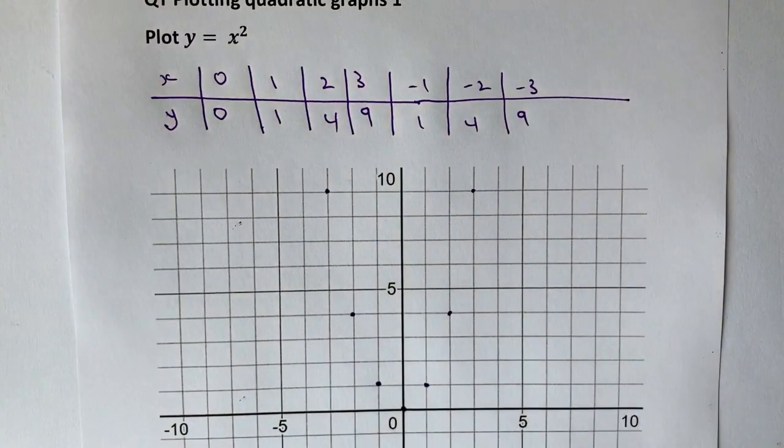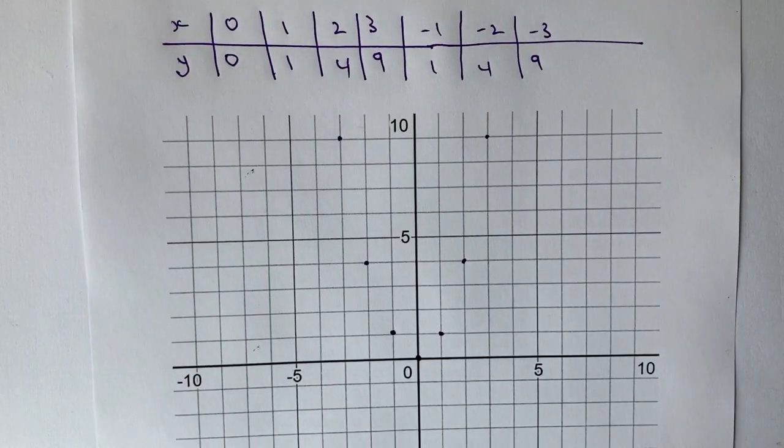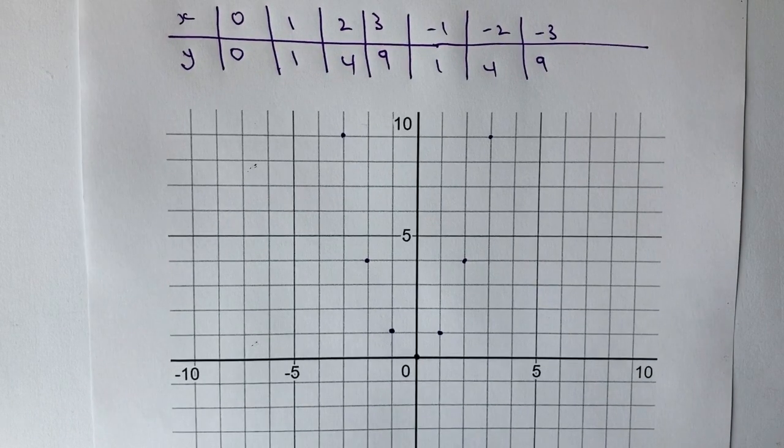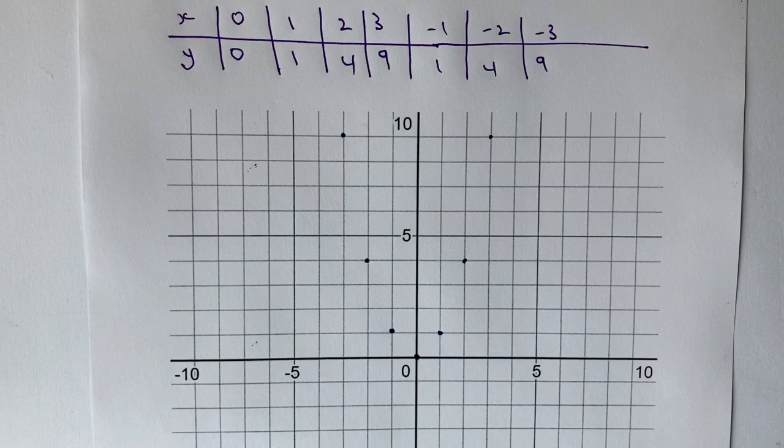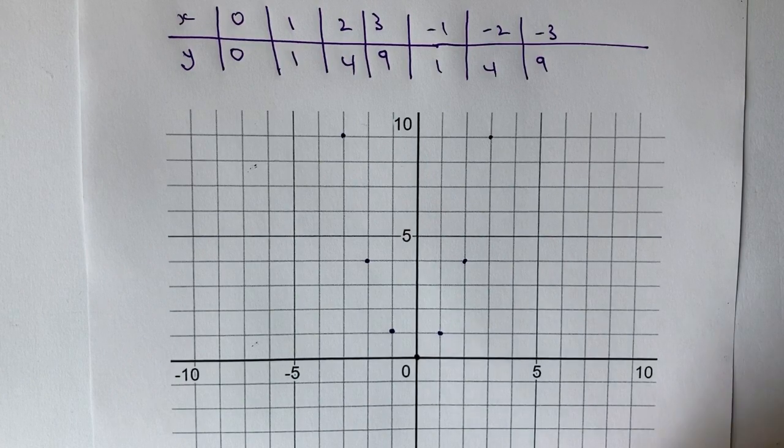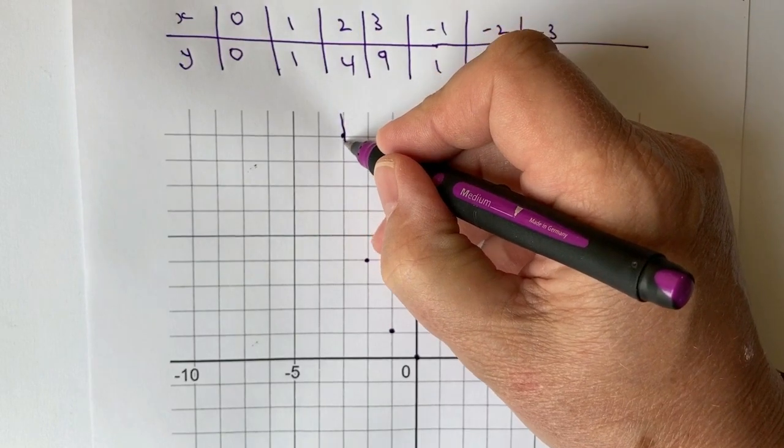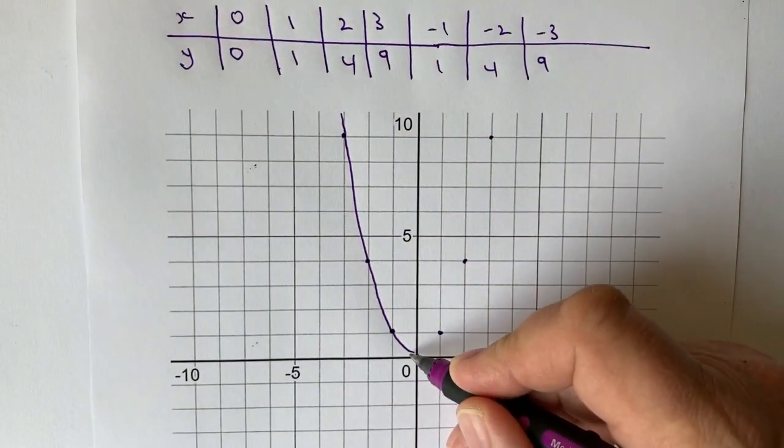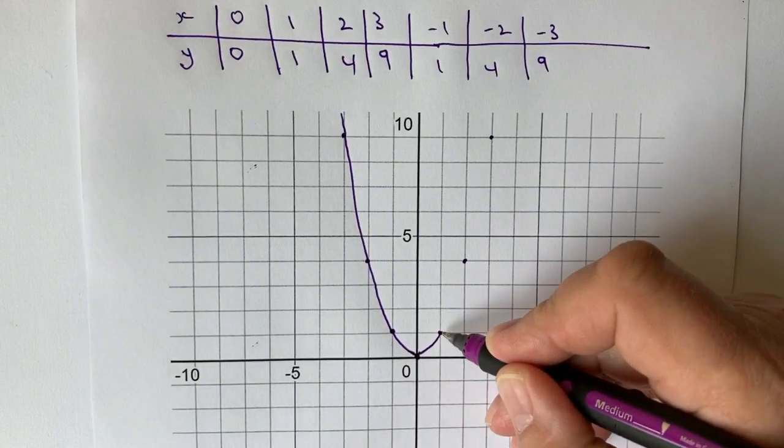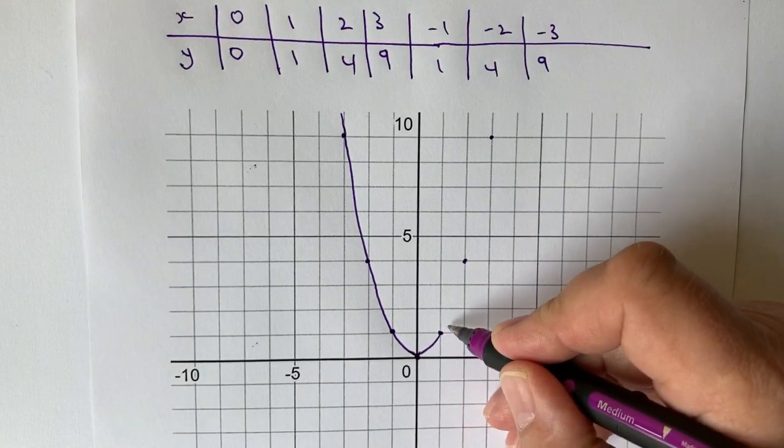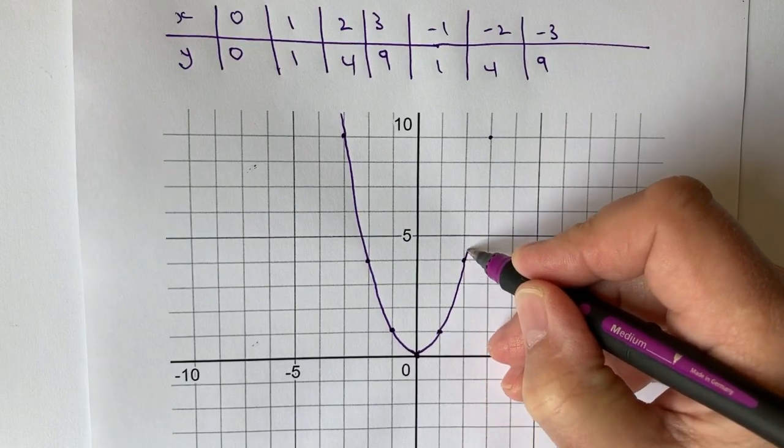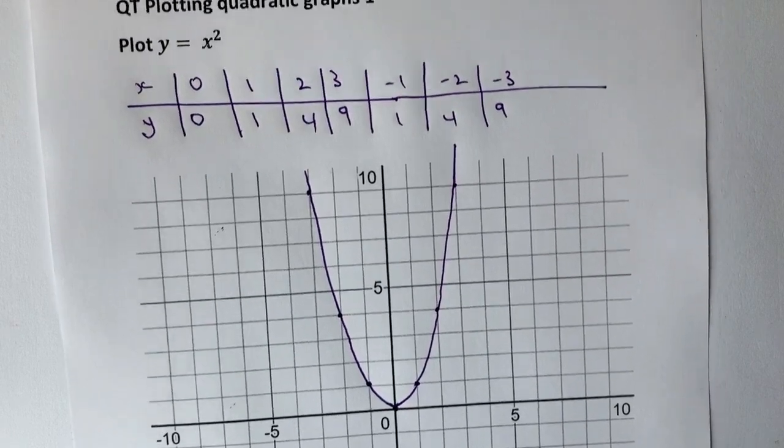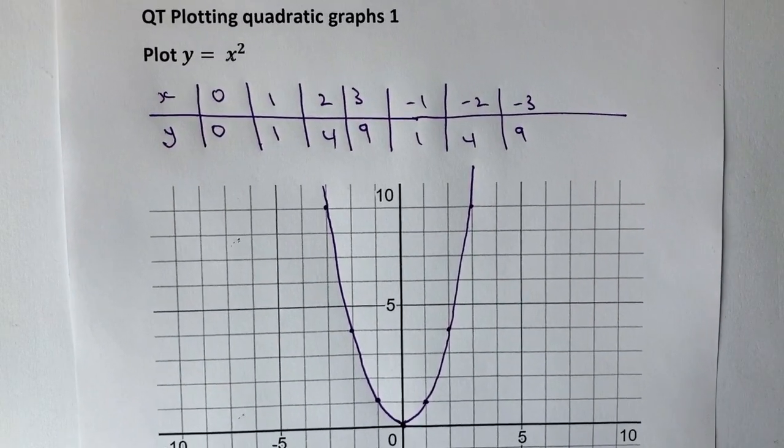And I've got myself now the coordinates for a nice, smooth quadratic graph. Now, it's going to be a little bit tricky to draw this onto the screen or on the video, but I'll give it my best shot. It's going to look something like that. Nice and smooth. A nice kind of turning point at 0, 0. Remember, it doesn't go flat. It's a nice turning point. And I'm going to go up to there and onto that. So that would give me now the graph of y equals x squared.